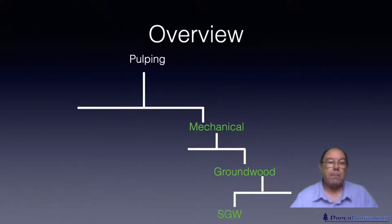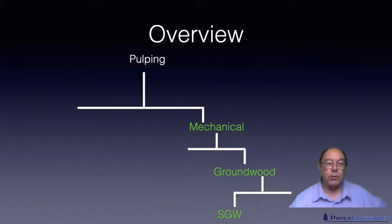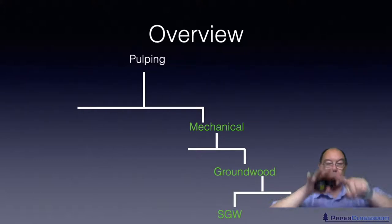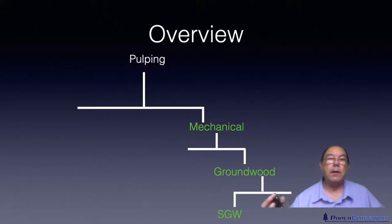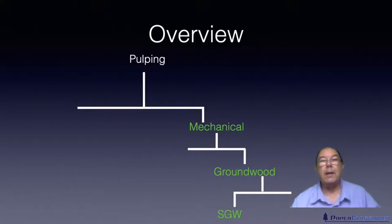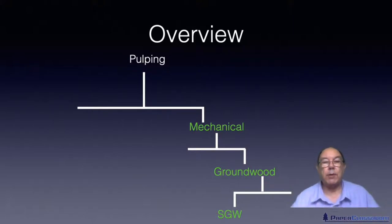The first method invented was SGW — stone ground wood — the simplest of all the systems. A big grindstone revolves around with a big log pressed against it. As the grindstone turns it generates friction against the log, the friction creates heat, the heat softens the lignin, and then the abrasive surface rips the fibres out of that softened lignin. The surface of the grindstone is washed and the whole thing is constantly repeated.